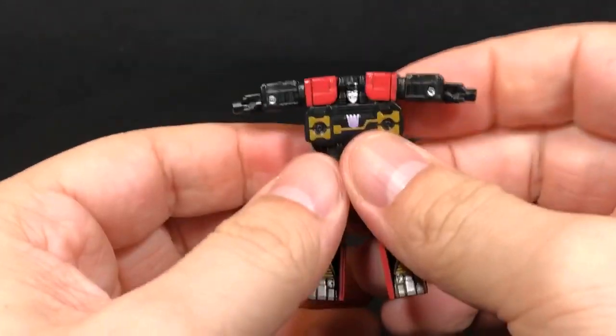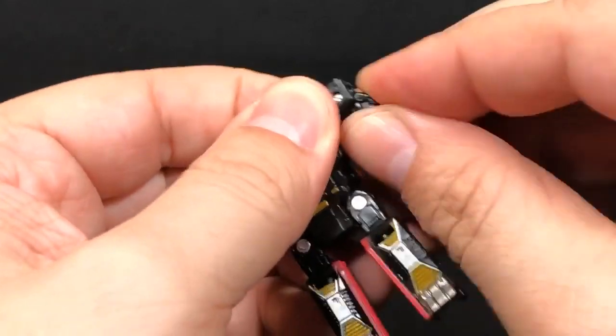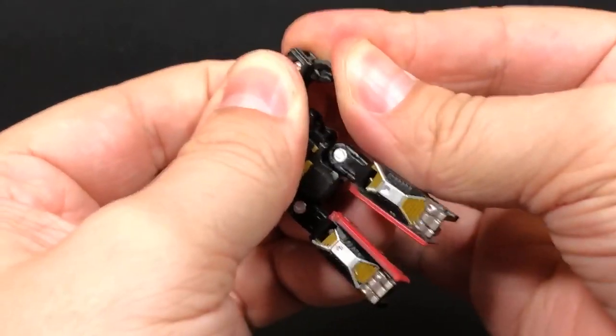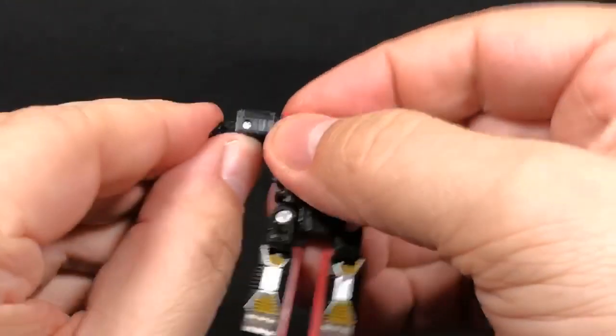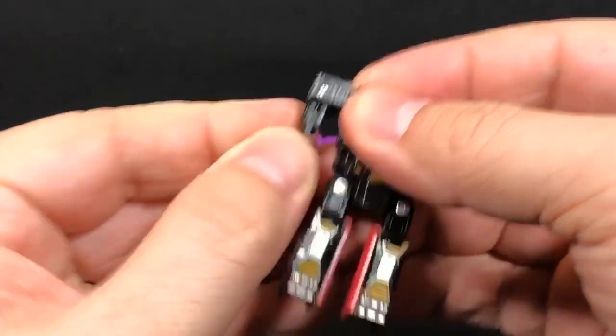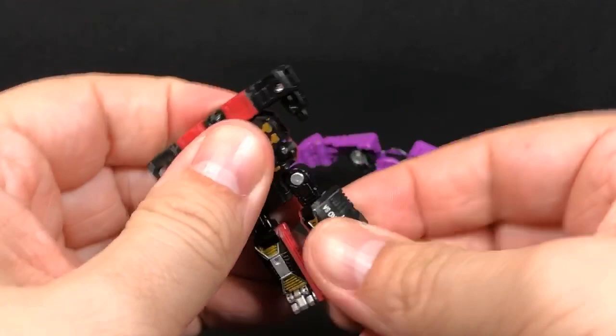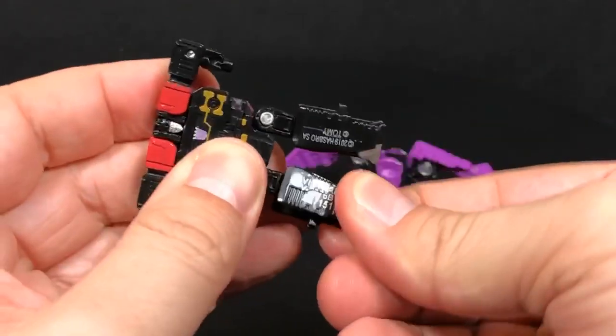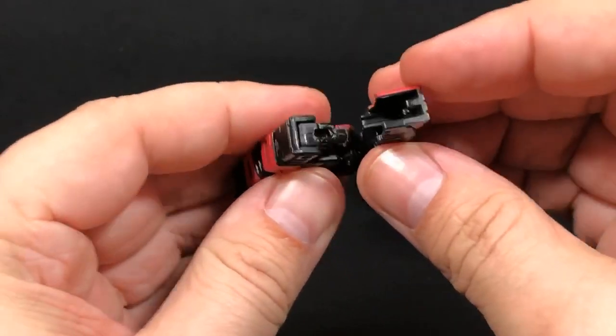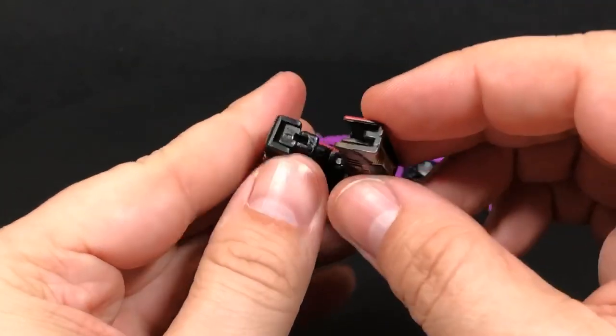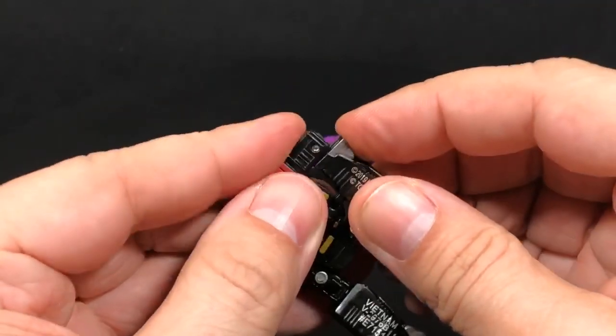First thing you want to do is bring his shoulders up just like that, and then you want to take these fists and bring them down. This one's a little tight right here, this one's a little bit easier for me. Then with legs, you want to twist them in like this and then bring them around.